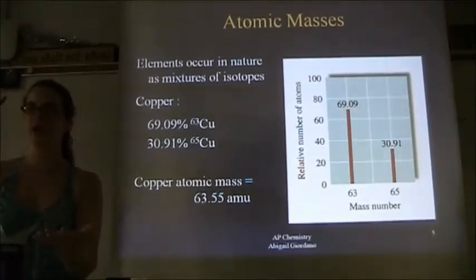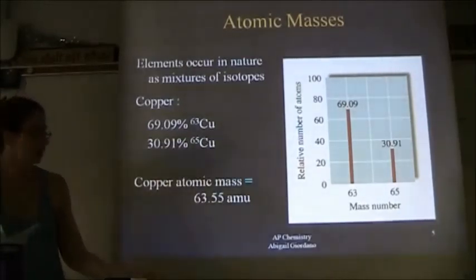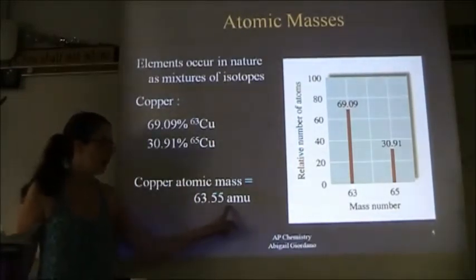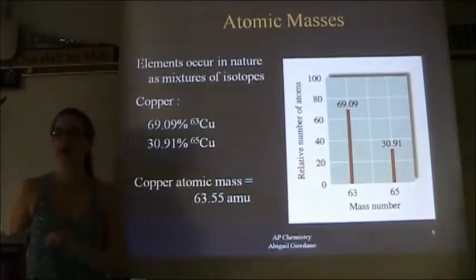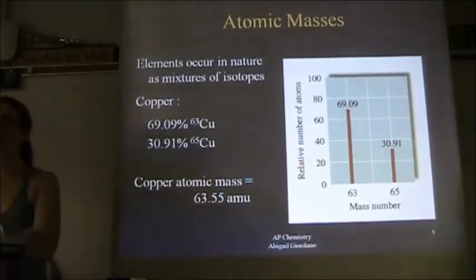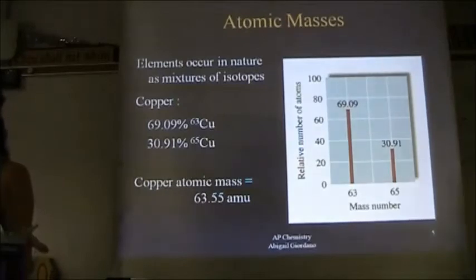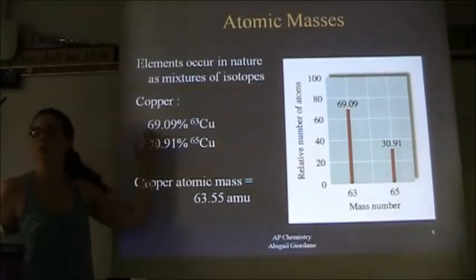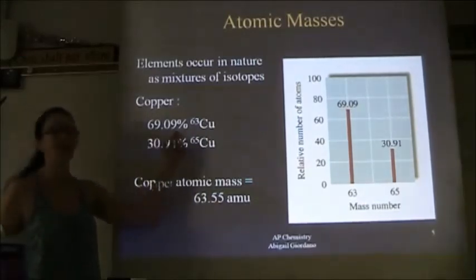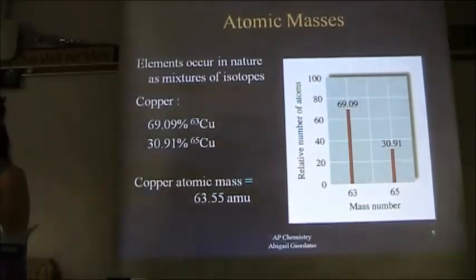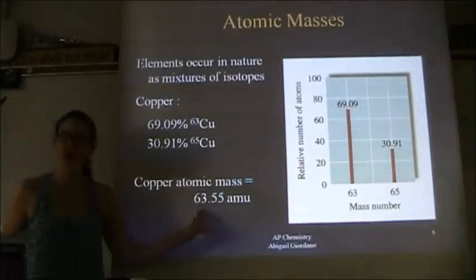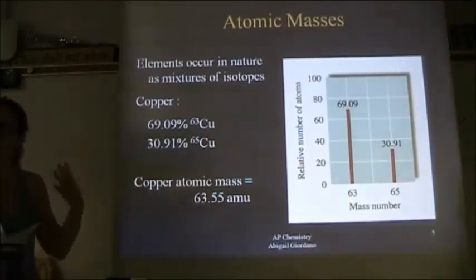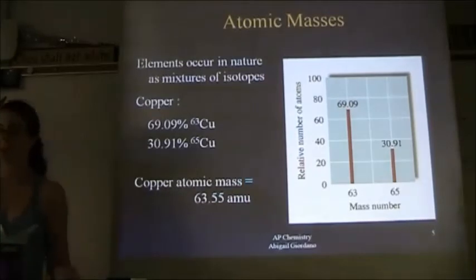Why is the average atomic mass closer to 63 than 65? There's a higher percent abundance of that isotope, so the average should be closer to 63. I just wanted you to understand where that number comes from.